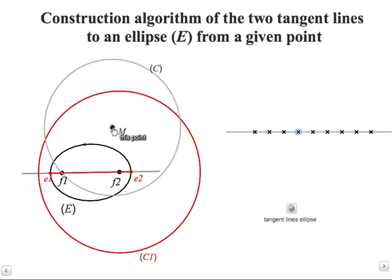The circle centered at M passing through F1. The intersection point between these two circles. And we know that the perpendicular bisector of F1, H1 and F1, H2 are the two tangent lines.